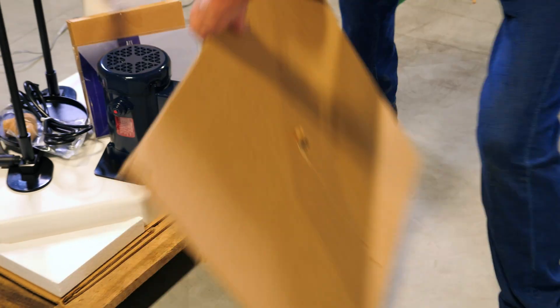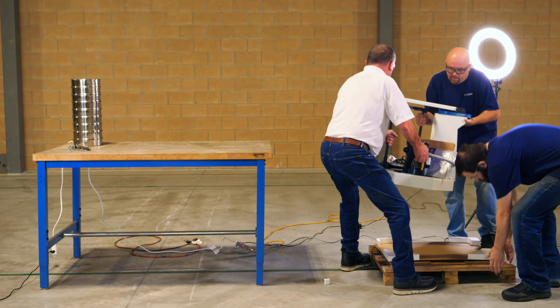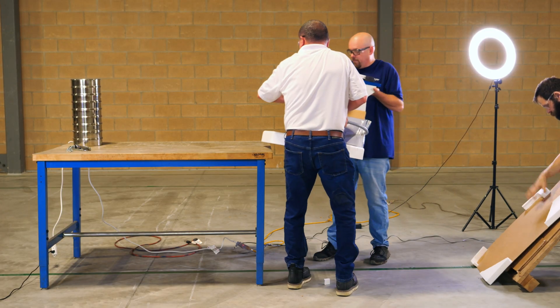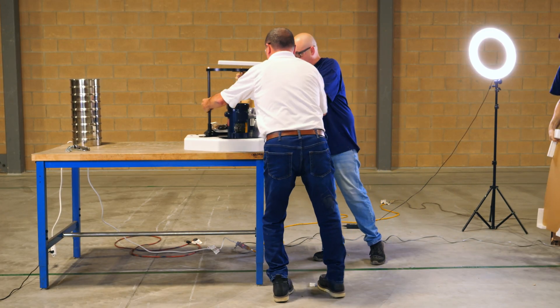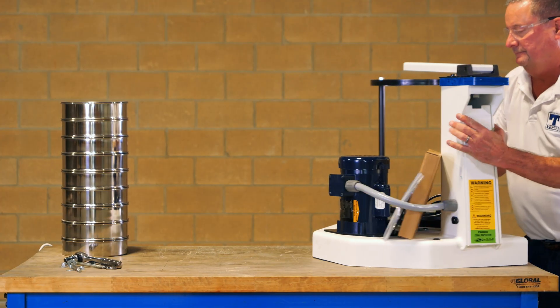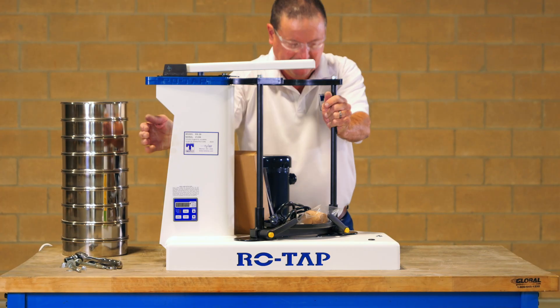it's time to get the sieve shaker on a heavy duty table. The RX29 weighs 178 pounds out of the box, so it's definitely recommended to lift it either with two or more people, or use a forklift, crane, or any other machine designed to lift heavy equipment.